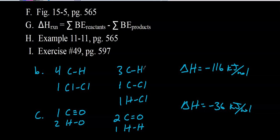For letter C, in the reactants we have one C≡O triple bond and two O–H single bonds. In the products we have two C=O double bonds and one H–H single bond. Delta H for the reaction is negative 36 kilojoules.